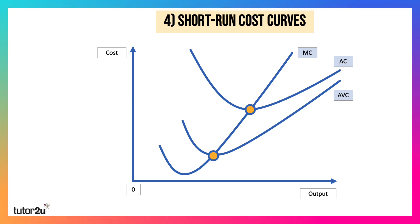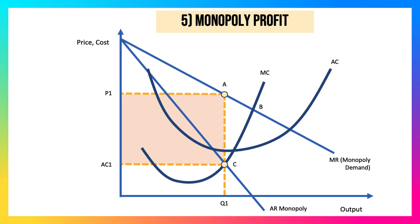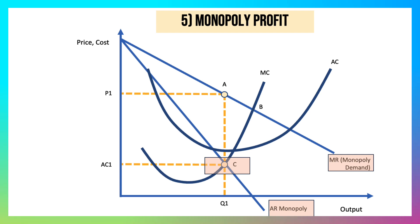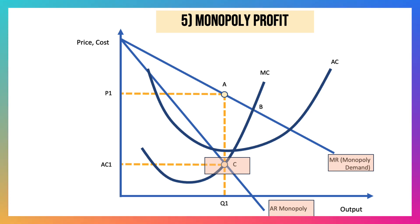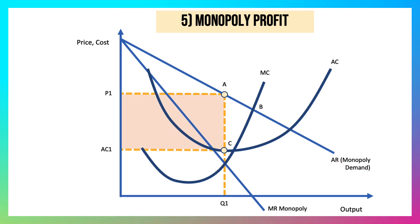Here is diagram disaster number five: a diagram showing total monopoly profit. They've incorrectly labelled marginal and average revenue — it should be the other way around. AR is monopoly demand; MR would be lower, below average revenue. They found the correct profit maximising output at Q1, but then they've drawn a cross to show average cost per unit. Once you've found output Q1, draw up to the demand curve — that will be the price, P1. But you have to use the average cost curve to show the cost per unit, and therefore the total profit is shown there.